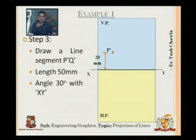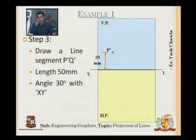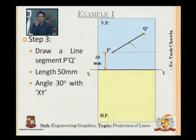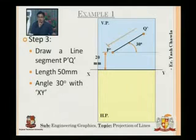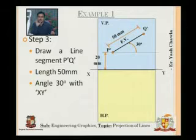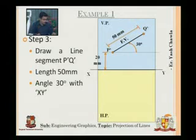The line makes an angle of 30 degrees with HP. XY is the reference line for both HP and VP. We will draw a reference line parallel to XY and then draw a line at 30 degrees of length 50mm. P-dash Q-dash is at 30 degrees and of length 50mm. Since this line is in VP, this is our front view, also called the elevation.